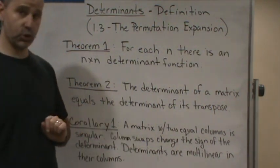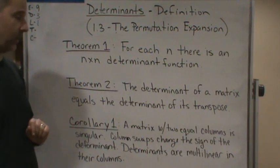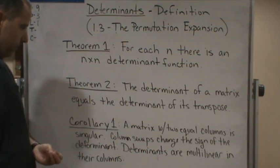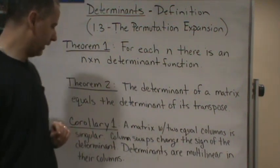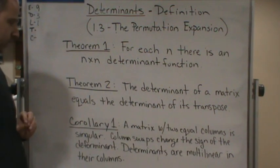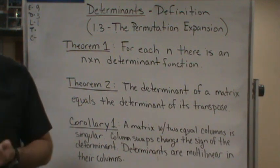Column swaps change the sign of the determinant, just like row swaps. And determinants are multilinear in their columns, just like they're multilinear in their rows.